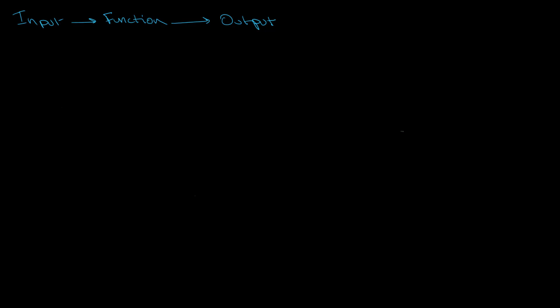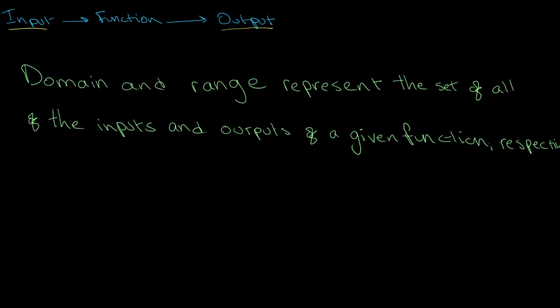A function can be described as a rule or expression that takes an input, does a little bit of work on it, and produces an output. Domain and range, which are what we are going to be talking about today, can be described as a representation of the set of all of the inputs and outputs of a given function respectively. The domain refers to the set of inputs, and the range refers to the set of outputs.